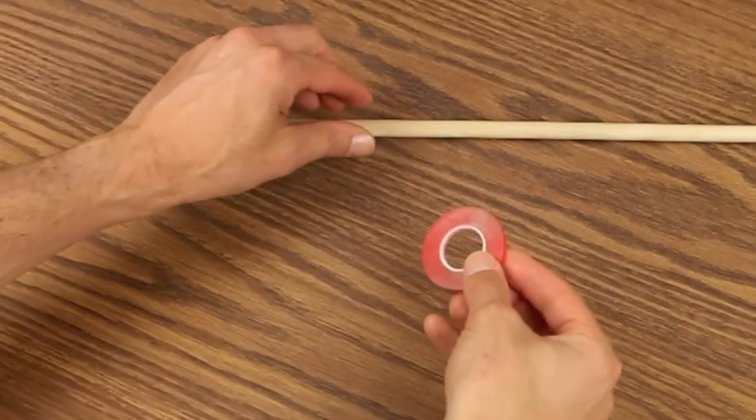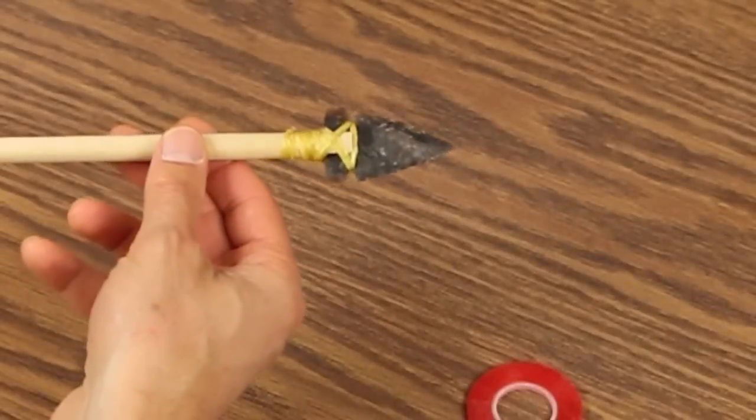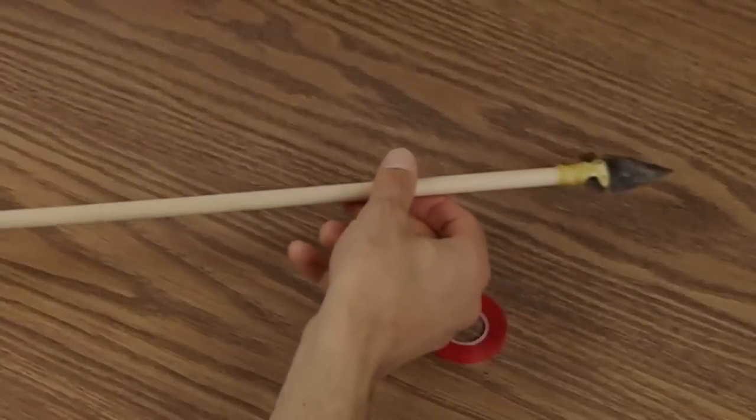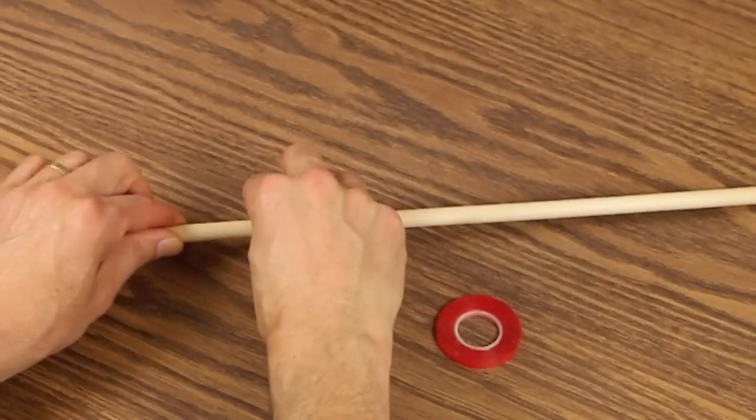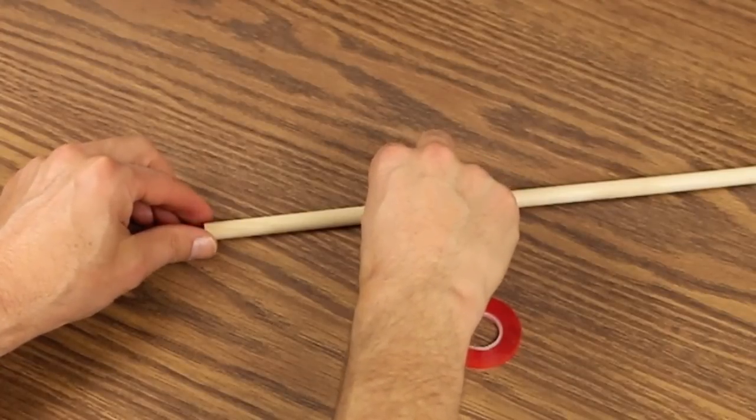This is the fletching tape that we'll use to attach it. Grab your arrowhead, take a look at it, see if there's one side that you like better, we'll say it's this one, and then lay the shaft down with that side facing up.